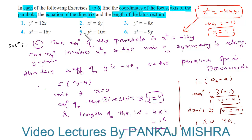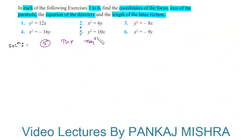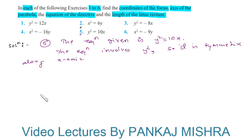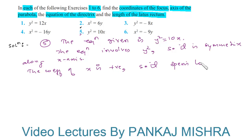In problem 5, the equation given is y² = 10x. Since the equation involves y², it is symmetric along the x-axis. Also, the coefficient of x is positive, so the parabola opens to the right.